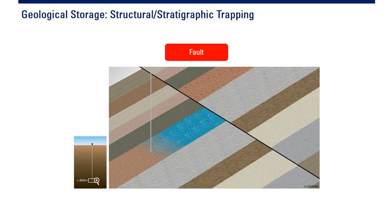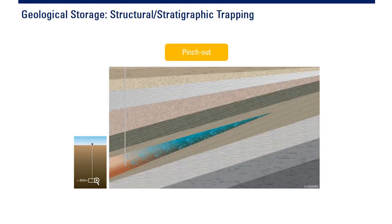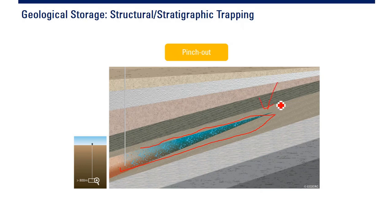You can also have structural trapping because of a fault — patahan. If you have a fault and across the fault you have small permeability, then your CO2 will be trapped quite permanently. And then you can also have pinch out as the trapping. Pinch out means the reservoir extension stops somewhere — reservoirnya habis, permeable zone-nya habis. At the pinch out, CO2 can accumulate quite permanently.